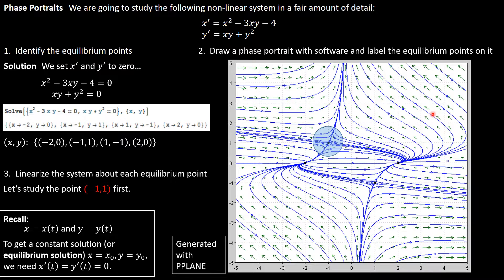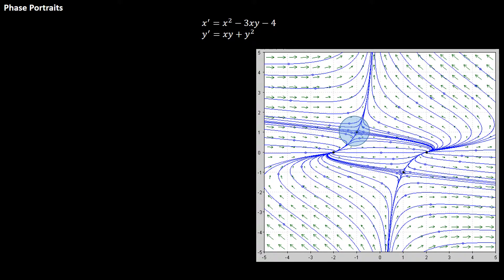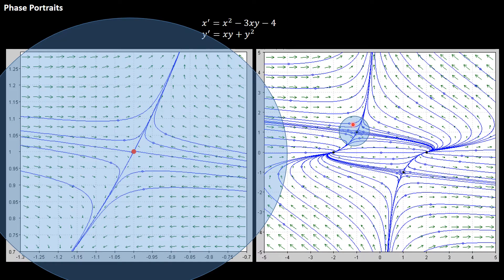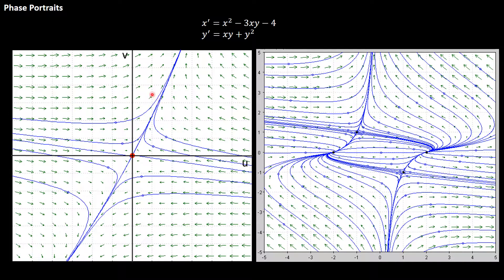We're going to imagine that we take a magnifying glass and we zoom in around this point negative one one, right here. So here's the picture zoomed out and here's the picture zoomed in. What I'm going to do now that I've zoomed in is I'm going to put down a vertical axis and a horizontal axis and I'm going to label them u and v. This is a new coordinate system that I've centered at my equilibrium point.